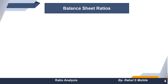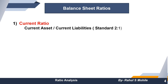First we will learn the balance sheet ratios, then profit and loss ratios, and then we will go towards the combined ratio. In balance sheet ratios, the first ratio is current ratio. Current ratio is very important and very simple to calculate. We take the total of current assets and divide it by current liabilities.